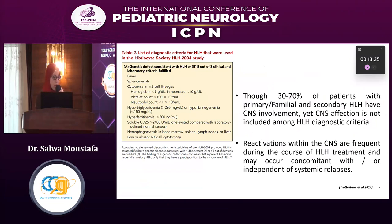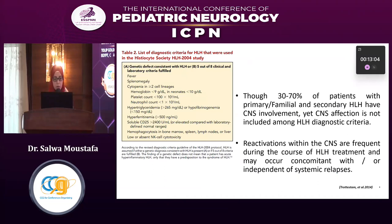HLH is a diagnosis of criteria. When five out of eight criteria proposed by the Histiocyte Society HLH 2004 study are met, a diagnosis of HLH can be made. The criteria include: fever, splenomegaly, cytopenia involving more than two cell lines, elevated triglycerides, decreased fibrinogen, elevated ferritin, elevated soluble CD25, and hemophagocytic activity confirmed in bone marrow, spleen, or lymph nodes.